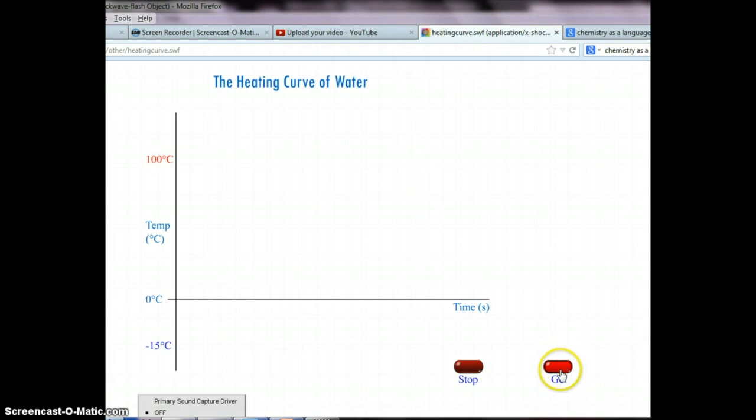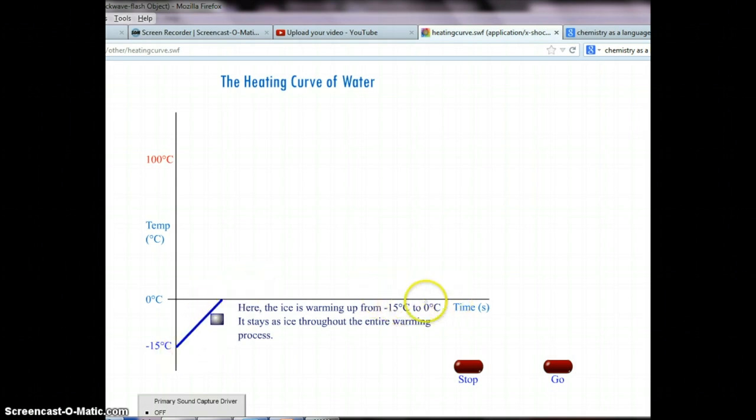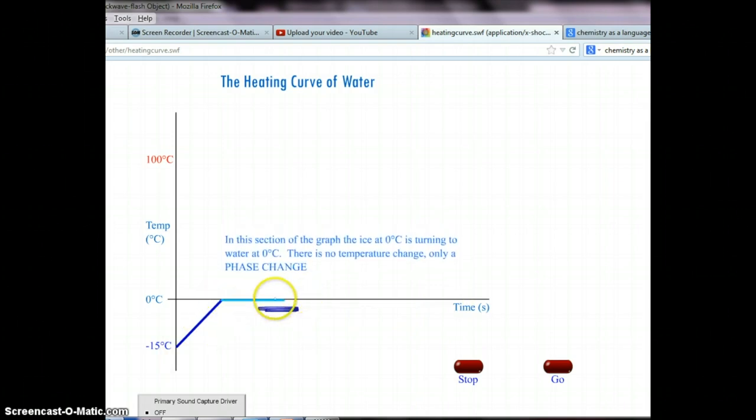Now, this is a great little animation of what's going on during a heating curve. First, you have ice warming up from negative 15 to 0, so this is solid down here that's heating up. Then you have another flat line, the first flat line.